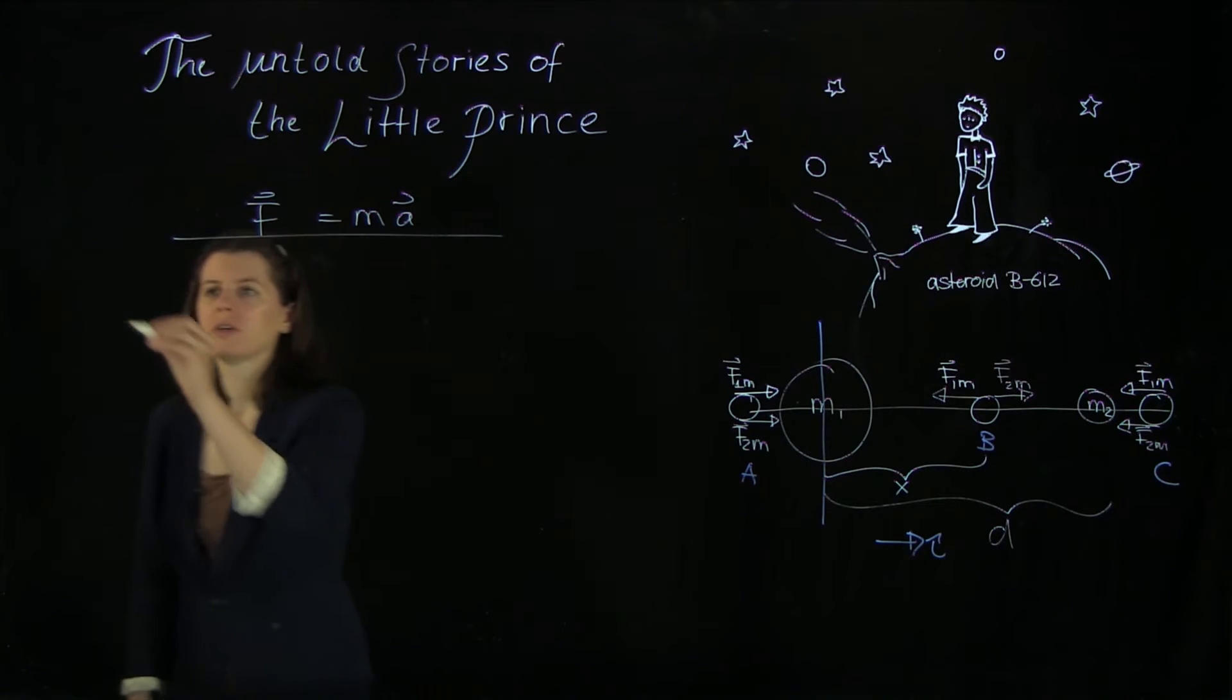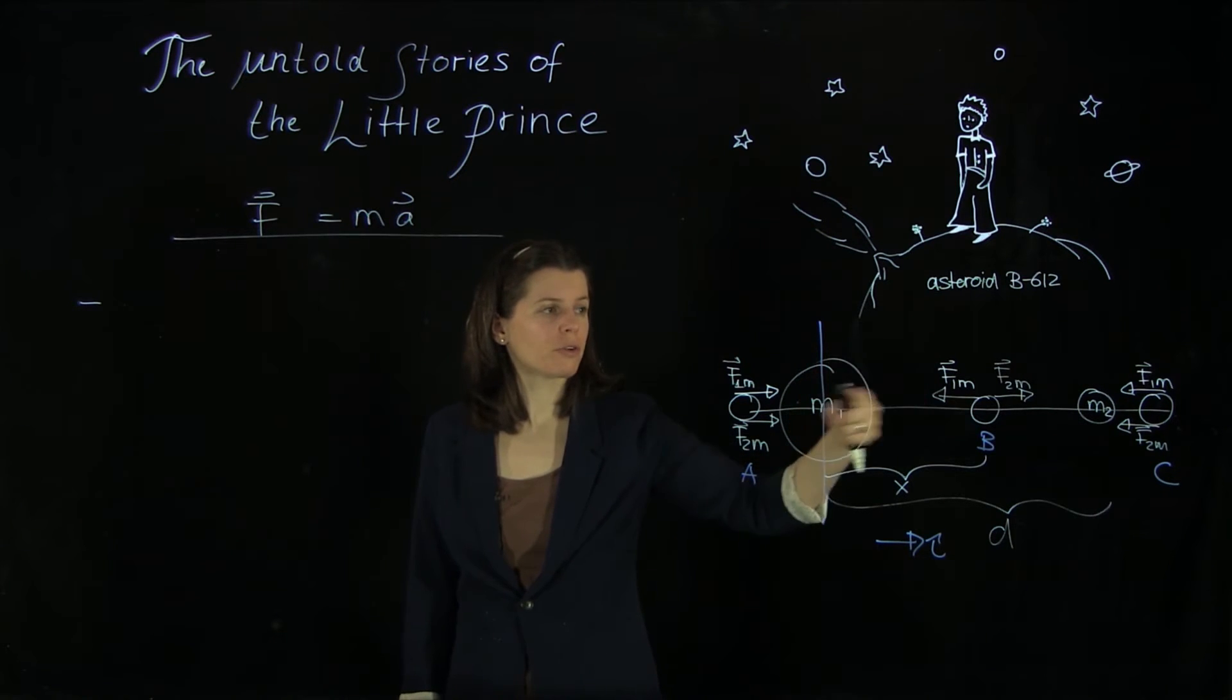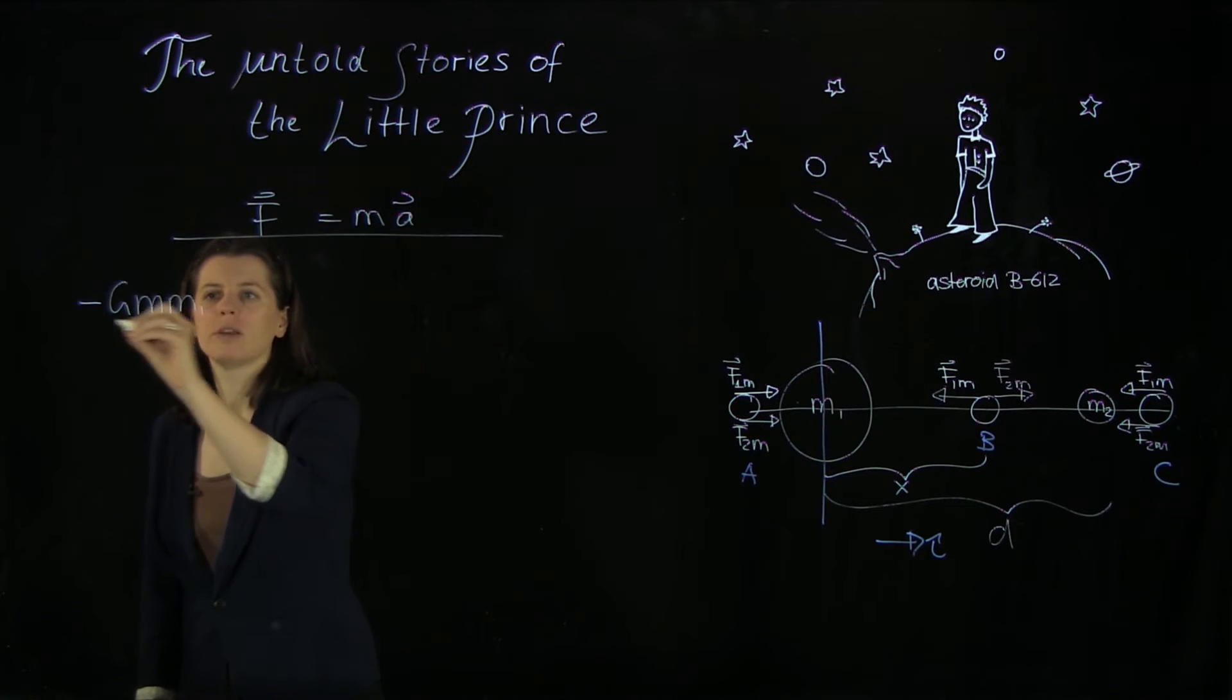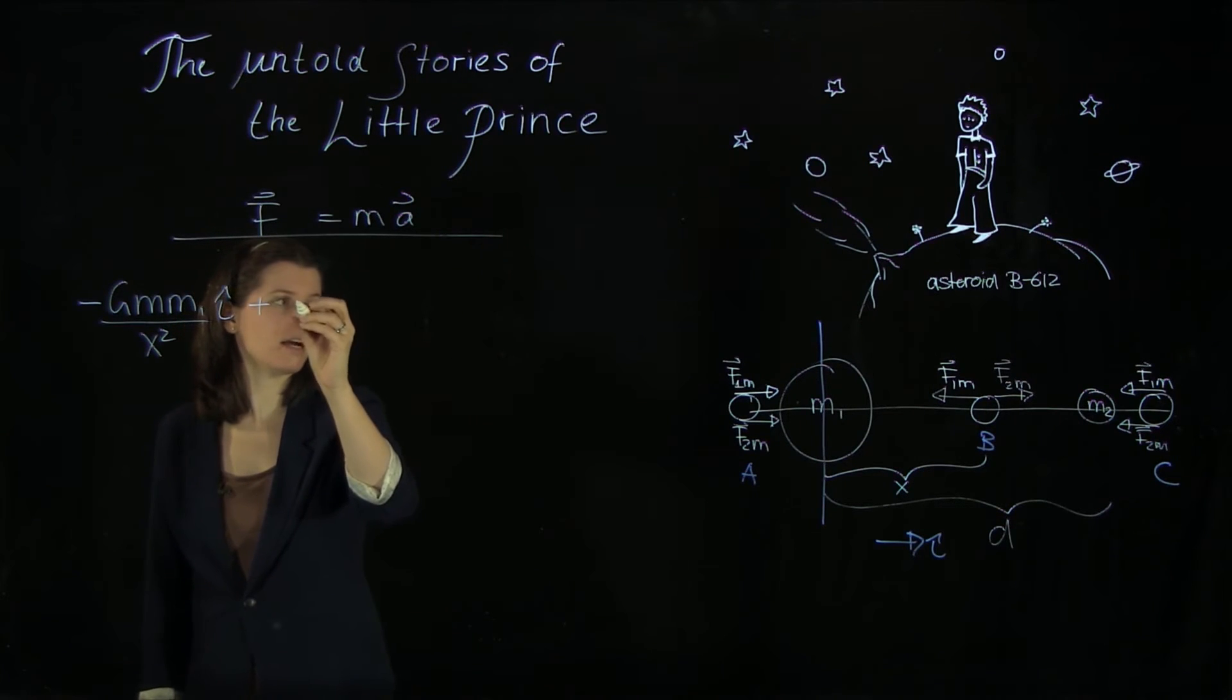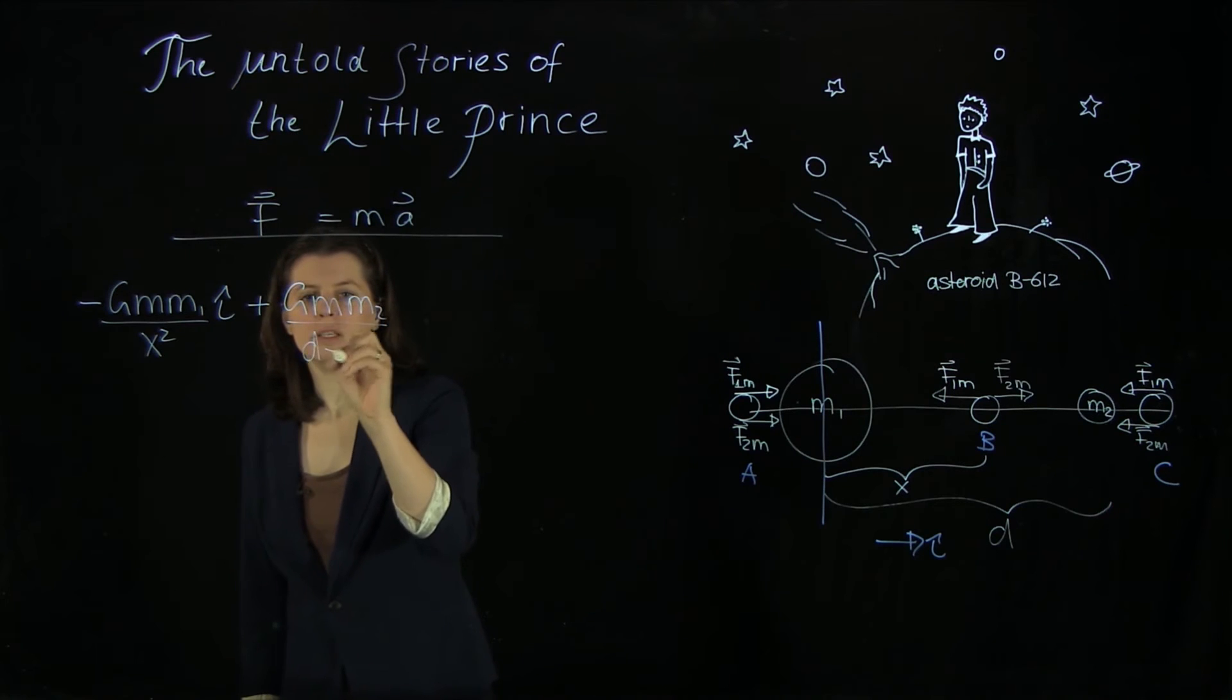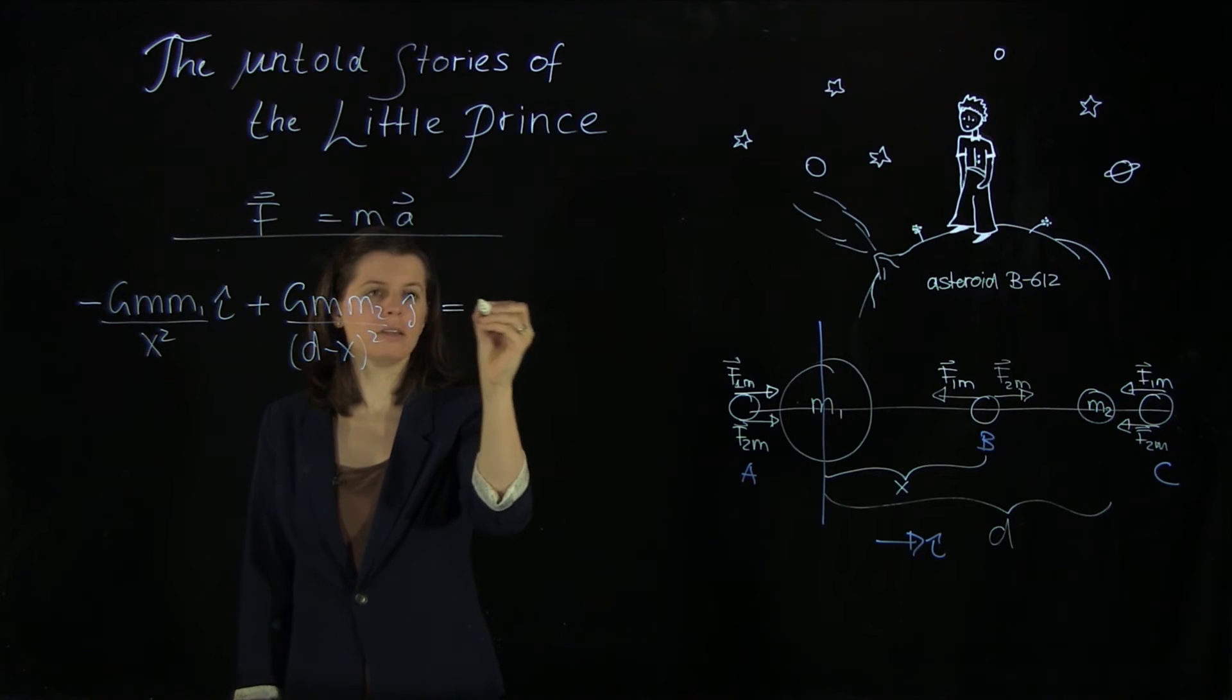And we have the universal law of gravitation between the mass of the object here. And we'll have to describe both components. So first this one F1m, and then F2m. And if we start with F1m, that goes in the negative i hat direction. So minus Gm m1 over the distance x squared in the i hat direction. And then the other one goes in the plus i hat direction. And we have Gm m2. And now we have d minus x gives us this portion. d minus x squared, also in the i hat direction. And that needs to add up to zero.